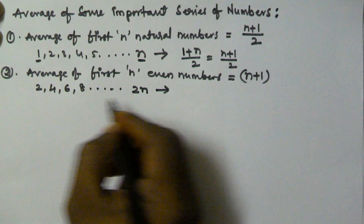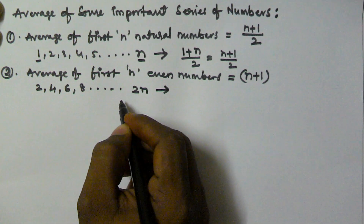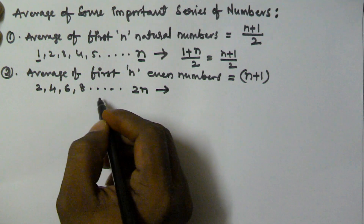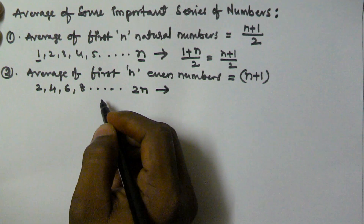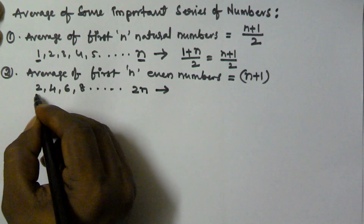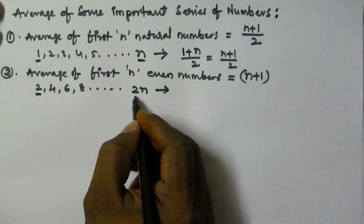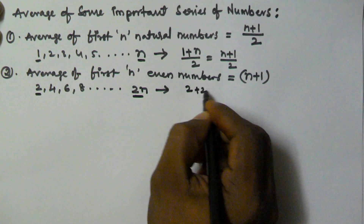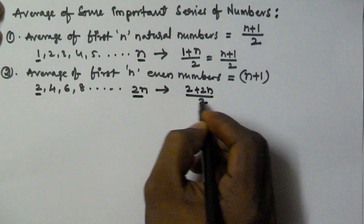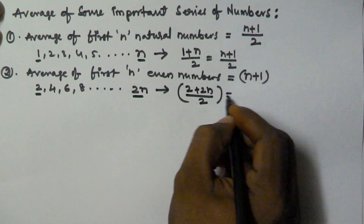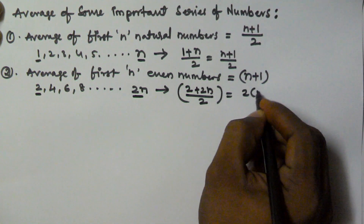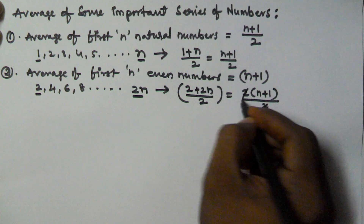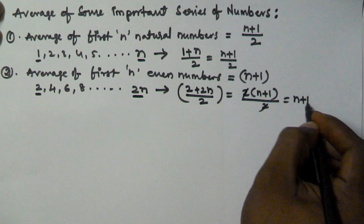If you observe, this series is also in arithmetic progression. The average is given by (first number + last number) / 2, which is (2 + 2n) / 2. This equals 2(n + 1) / 2, and the 2s cancel to give n + 1.